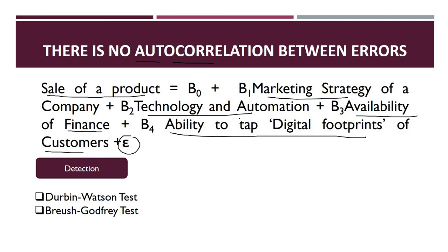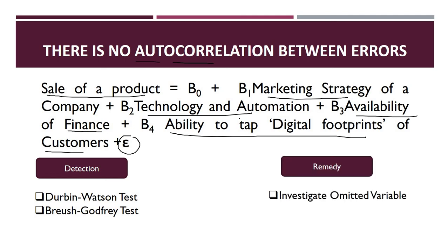To detect autocorrelation, there are two tests: the Durbin-Watson test and the Breusch-Godfrey test. The remedy is to investigate omitted variables. In the example, previous day's advertisement should also be included as an independent variable in the model. By adding that variable, we can reduce autocorrelation among the error terms.